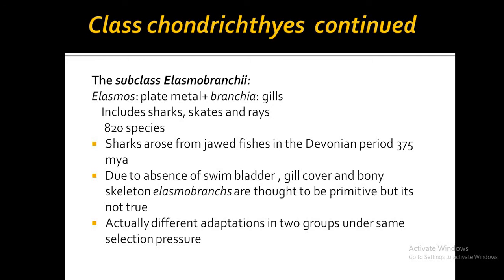Chondrichthyes have been divided into two subclasses: Elasmobranchii and Holocephali. The word Elasmobranchii is derived from two words — 'elasmo' meaning plate metal and 'branchia' meaning gills. This subclass includes sharks, skates, and rays, but not ratfishes, which belong to the next subclass. About 820 species are known. Sharks arose from jawed fishes in the Devonian period, almost 375 million years ago. No swim bladder is present in members of this class.